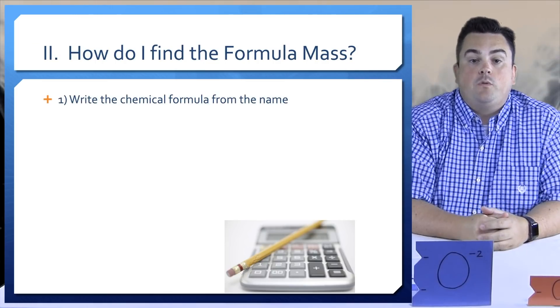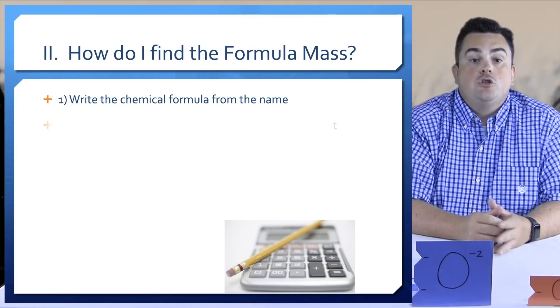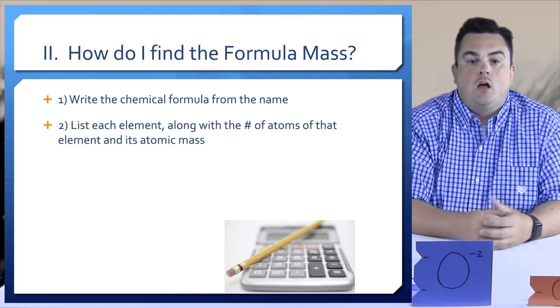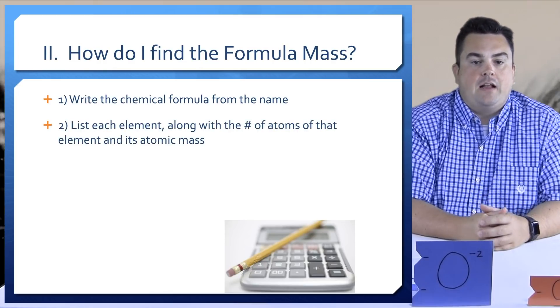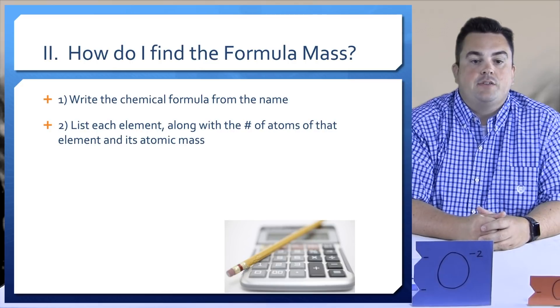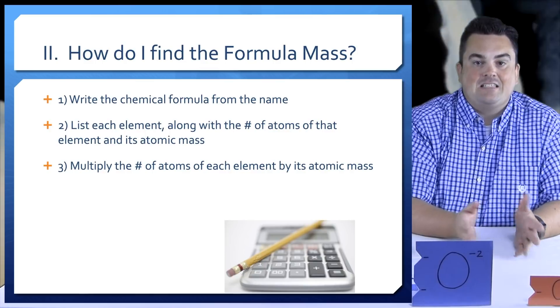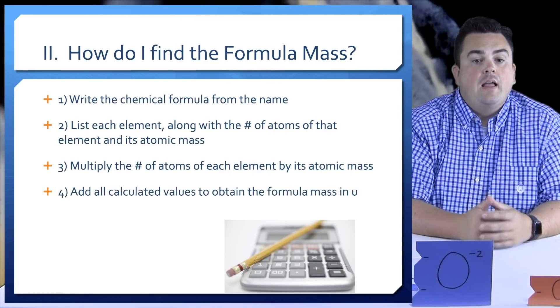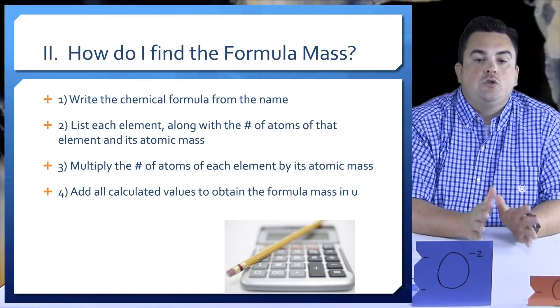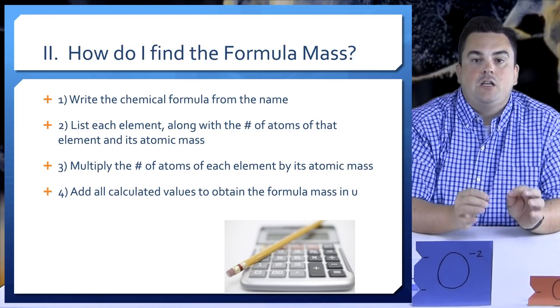How do I find the formula mass? One, write the chemical formula from the name. Two, list each element along with the number of atoms of that element and its atomic mass. Three, multiply the number of atoms of each element by its atomic mass. Four, add all calculated values to obtain the formula mass in U.